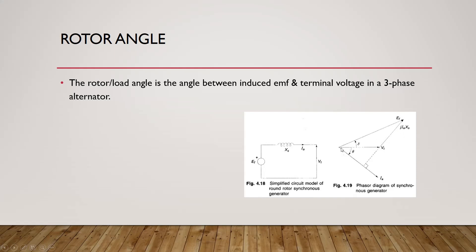The current multiplied by j increases the current by an angle of 90 degrees — perpendicular to the current — and multiplied by Xs, this represents jIXs, which is the voltage drop from the generator to the terminal. We assume the resistance is very small and can be neglected. So the rotor or load angle is the angle between the induced EMF E and V terminal.